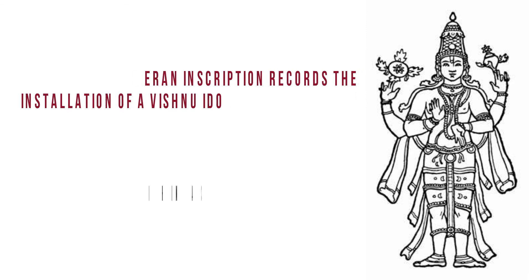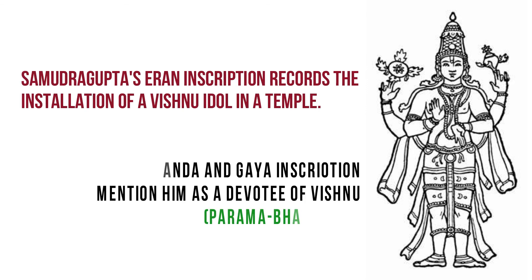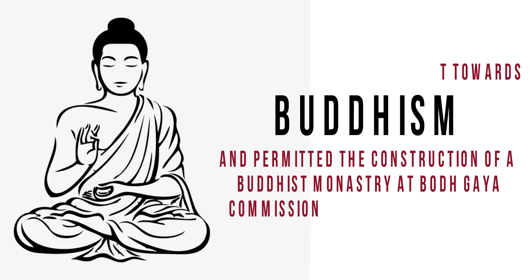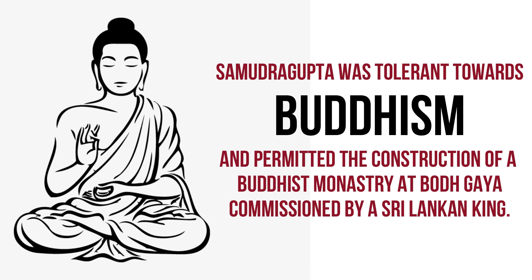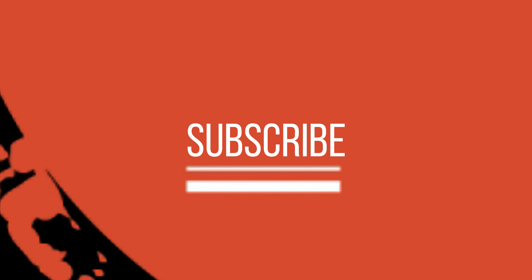Regarding religion, the Eran inscription records the installation of a Vishnu idol in a temple, and the Nalanda and Gaya inscriptions attribute to Samudra Gupta the title of devotee of Vishnu, i.e., Parama Bhagavata. At the same time he was tolerant towards Buddhism and permitted the construction of a Buddhist monastery at Bodh Gaya, commissioned by a Sri Lankan king. Besides this, Samudra Gupta is considered a compassionate ruler who cared greatly for the welfare of his subjects, particularly the poor and the destitute.